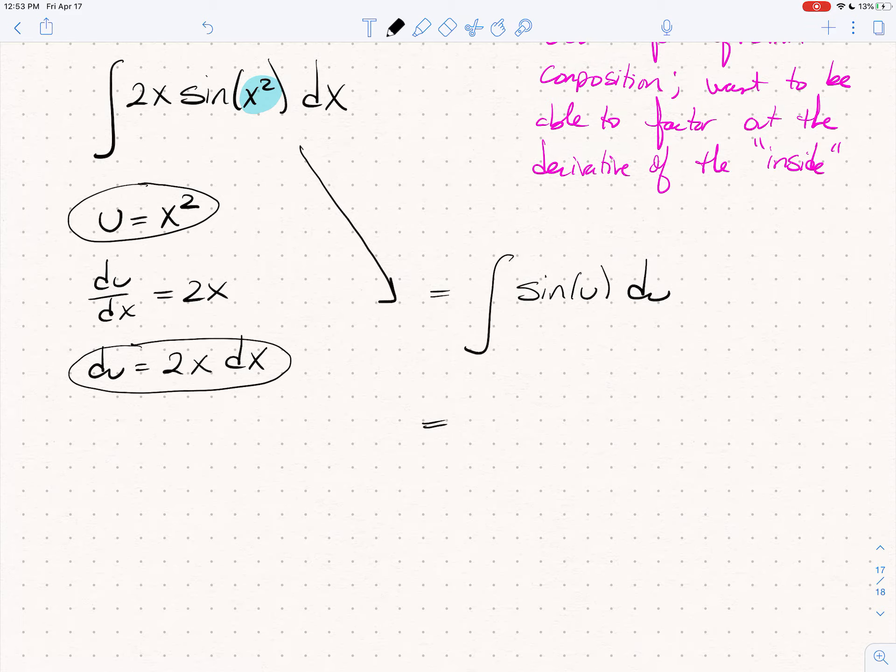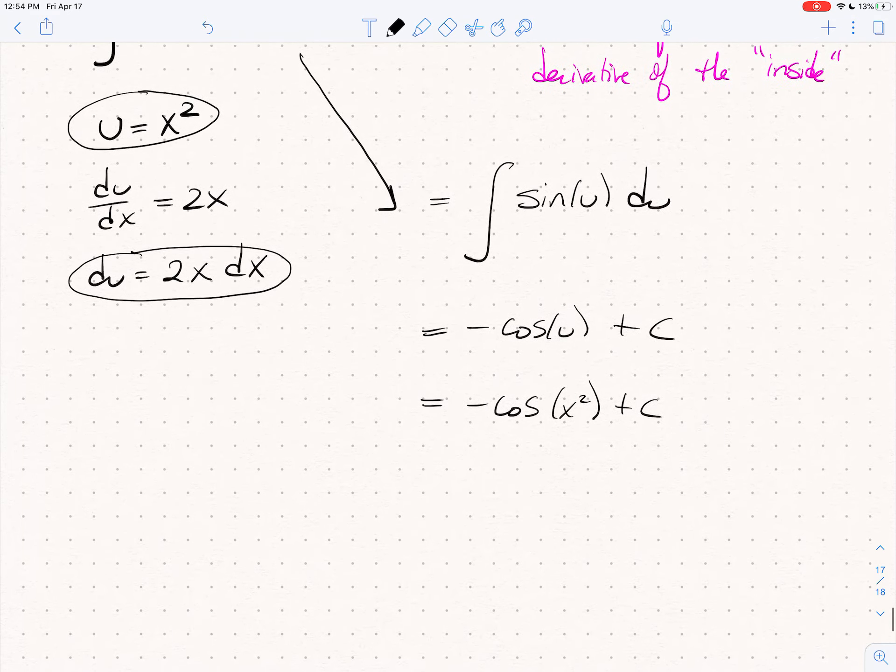You might be thinking, well, what does that do? Well, I know what the antiderivative of the sine of u is. That's just minus cosine of u plus a constant. And now, I say, okay, but I had a problem in terms of x, not u. What do I do? Well, I'm going to plug in what u was. u is x squared. So, this is minus cosine of x squared plus c.